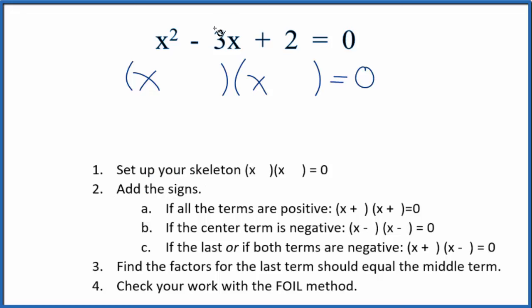We can see in the center we have a negative. If we have a negative in the center term, we'll use this format here, so let's just put negatives right here. Then we can find the factors for the last term, and they should add up to equal that middle term.